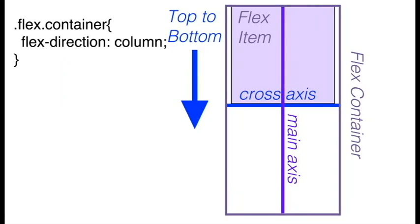When we set flex-direction to column, our main axis is vertical and our cross axis is horizontal. The flow of our flex items will be from top to bottom along the main axis.